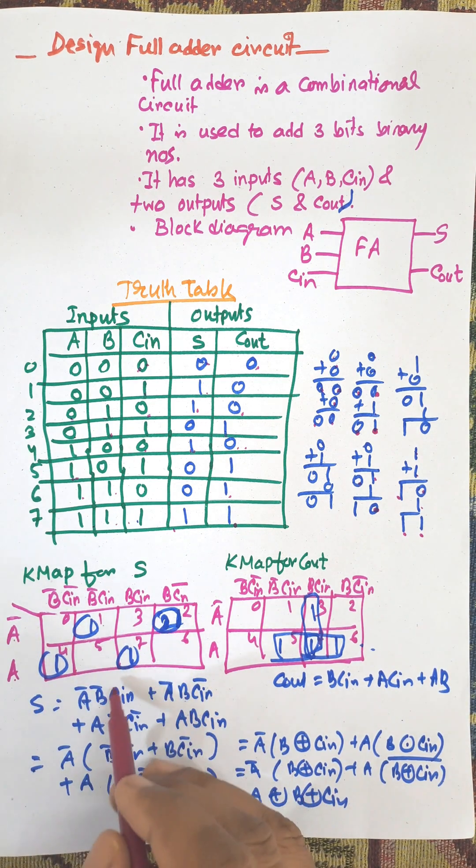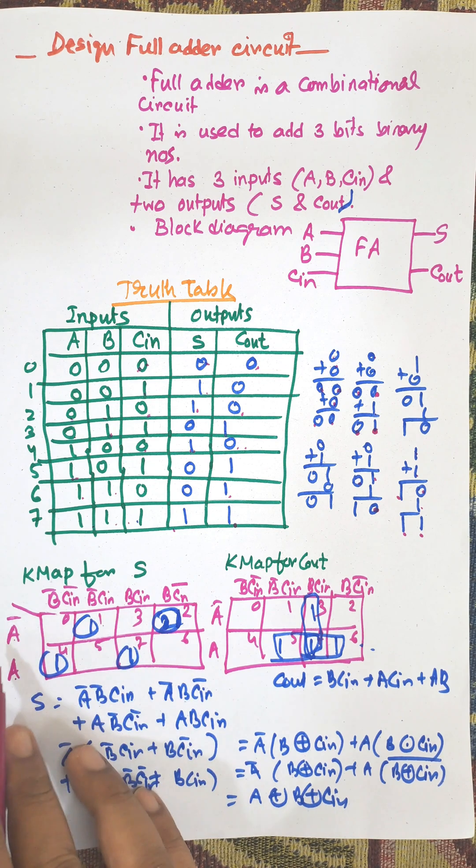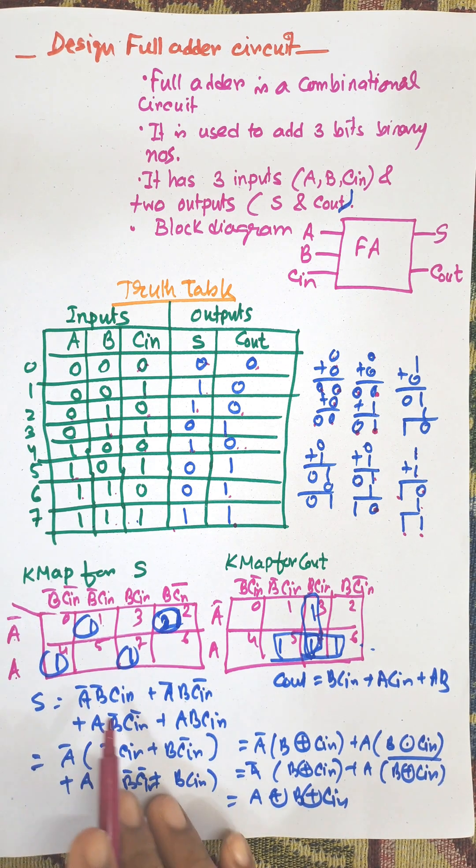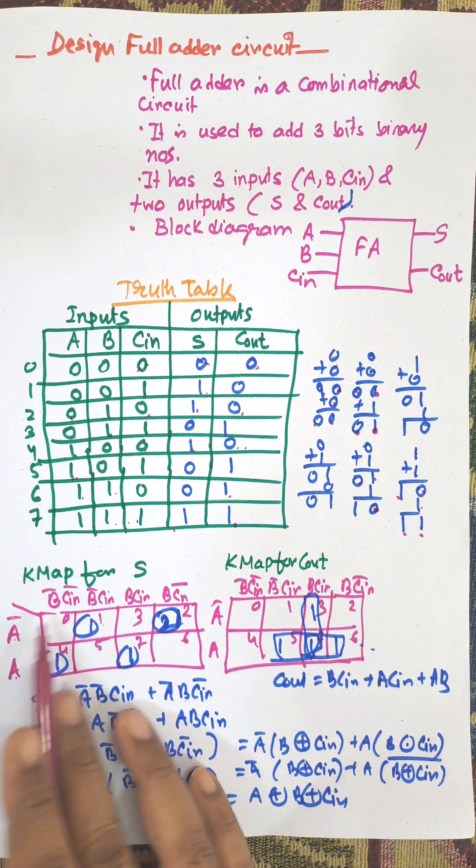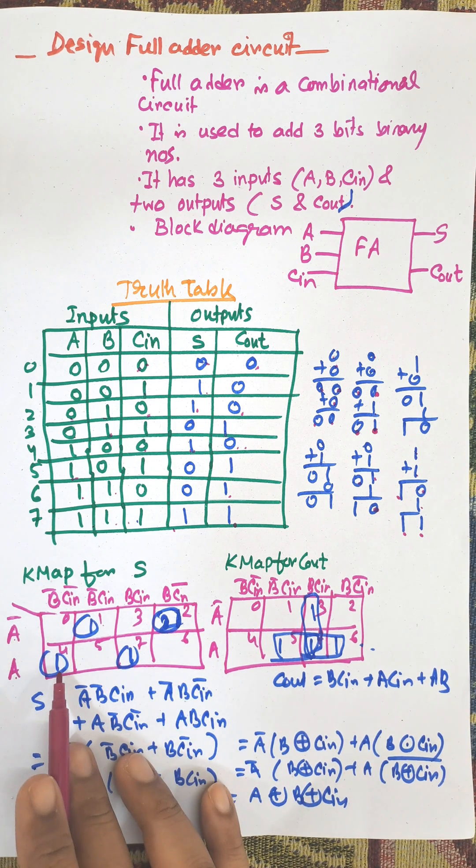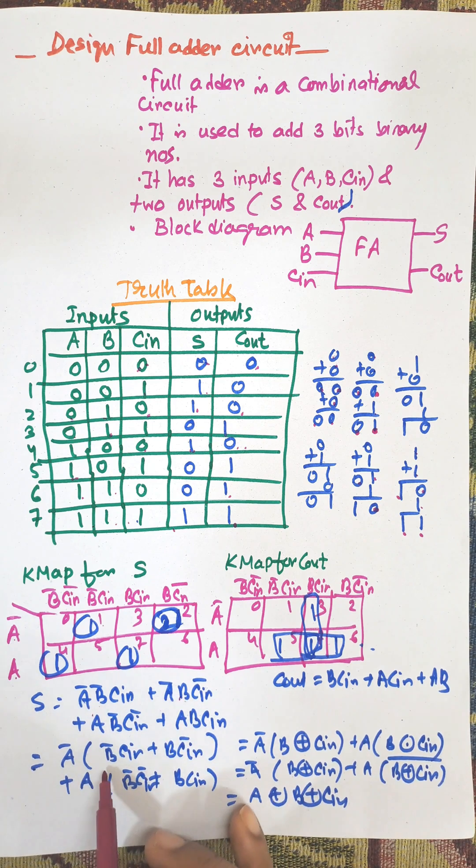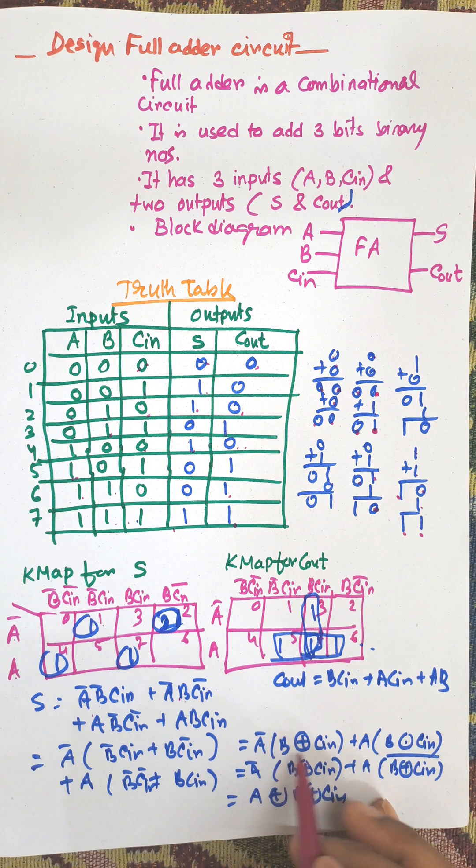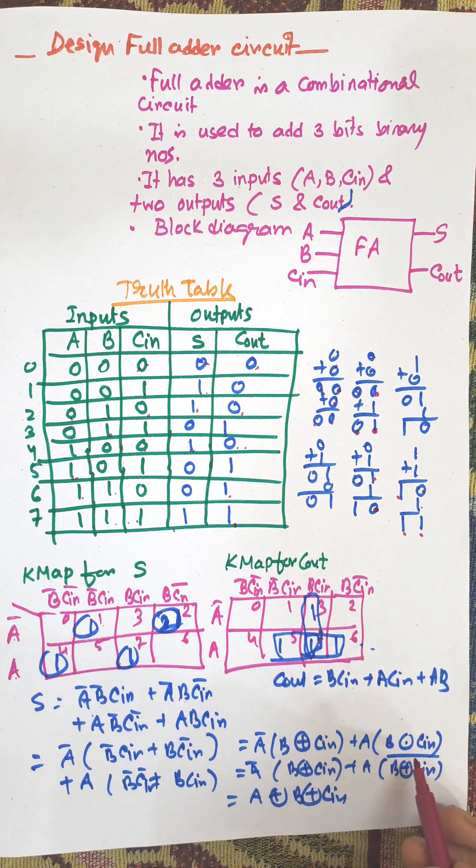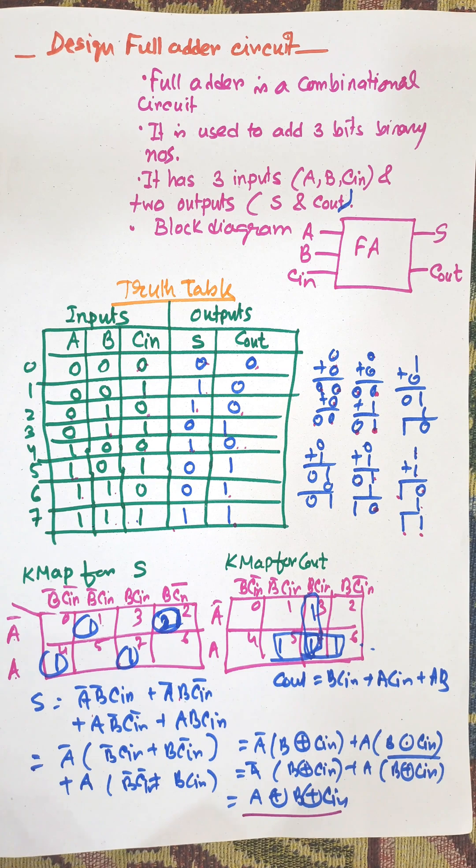Grouping is not possible here, so we have to select every individual one as a group. A bar B bar C in, A bar B C in bar, A B bar C in bar, A B C in. This is the common circuit expression for XOR, and this is the expression for XOR. Now this is the final circuit Boolean expression for sum.